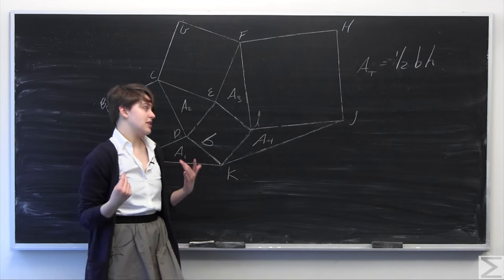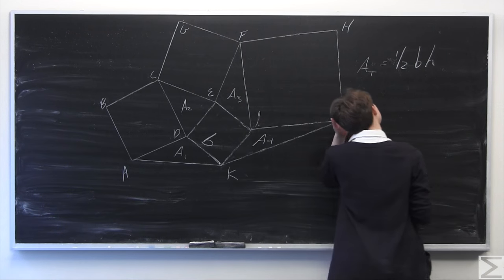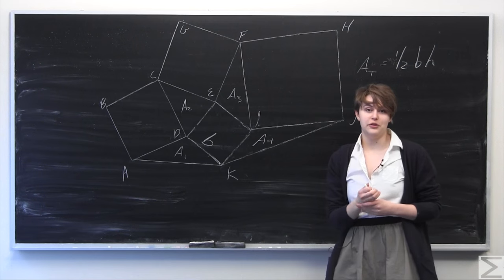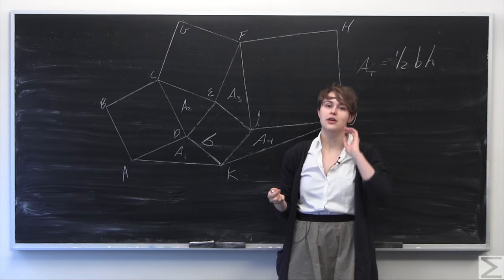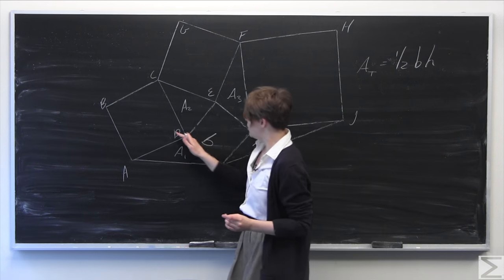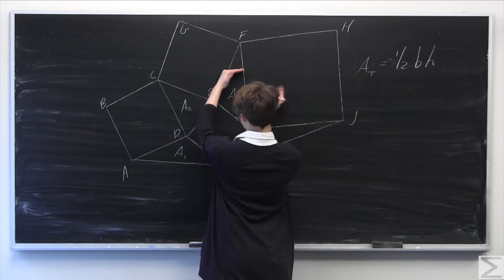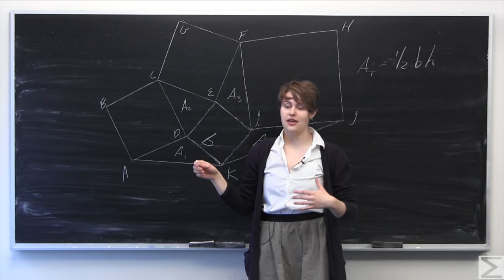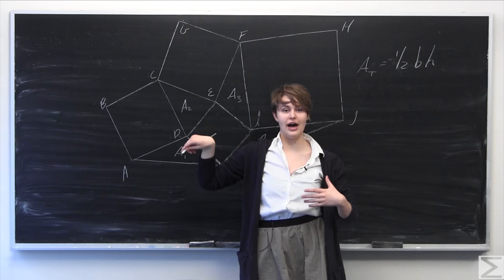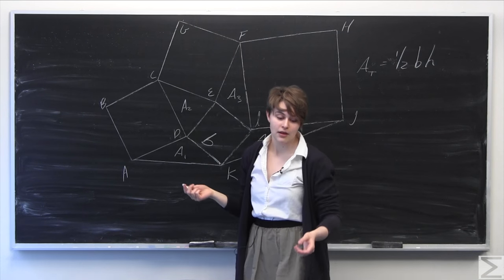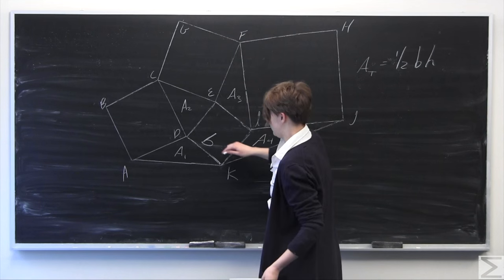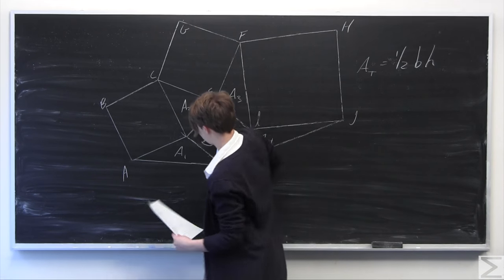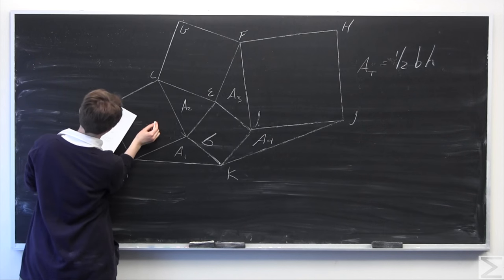Now we need to find a way to compare the heights of all these four triangles. The way we're going to go about doing this is actually pretty cool. It kind of reminds me of the proof of the Pythagorean theorem, in that we're going to create rectangles coming out of this center triangle here, all of the same common height, and then prove that the height of all the triangles is the same. So we're just going to draw a line coming straight out here.